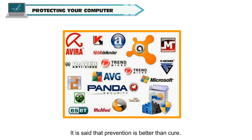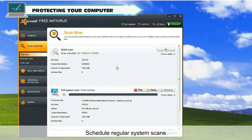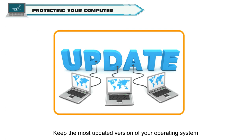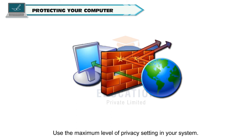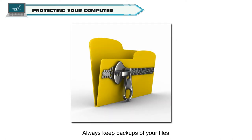Protecting your computer. It is said that prevention is better than cure. Some ways in which you can prevent malware infections include: install an anti-virus and anti-malware software and keep the software up to date; schedule regular system scans; ensure all flash drives are free of virus before inserting into the port; keep the most updated version of your operating system; secure your network with passwords and firewall; use the maximum level of privacy setting in your system; don't click on any link or pop-up that shows up on your screen; never use an open Wi-Fi because that makes you vulnerable to malware on that network; always keep backups of your files; and allow only trusted people to use your system.